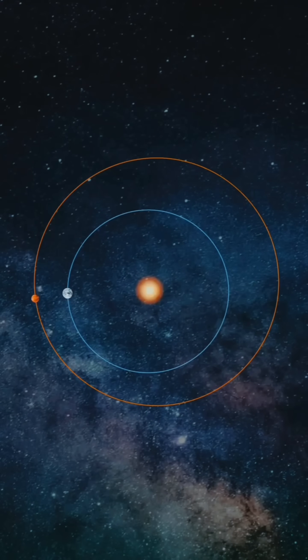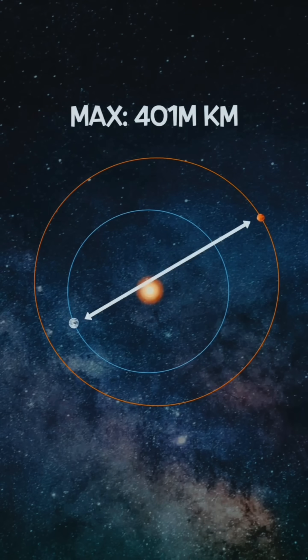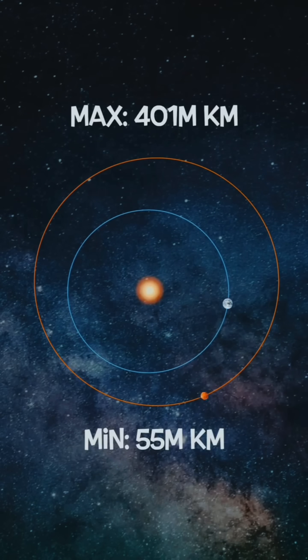It varies as the planets travel at different speeds along their respective elliptical orbits. That being said, the distance between the two planets could be as large as 400 million kilometers and as short as 55 million kilometers.